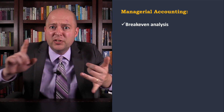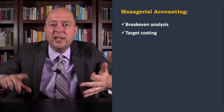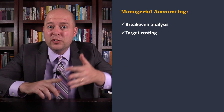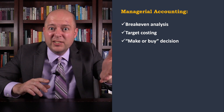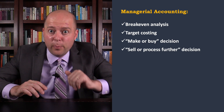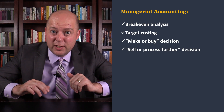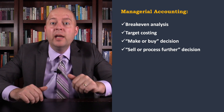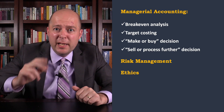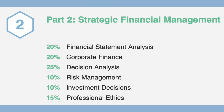But part two also has topics for managerial accounting, topics like break-even analysis, target costing, and decisions like the make-or-buy decision and sell-or-process-further decision. Finally, part two covers risk management and ethics. Here's a breakdown of all the topics on part two.